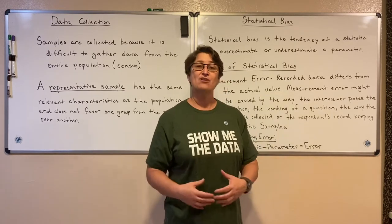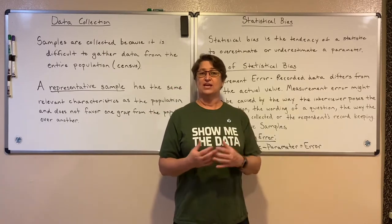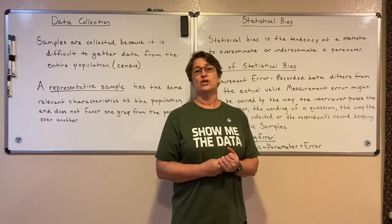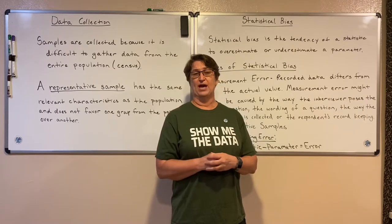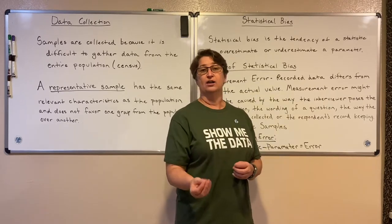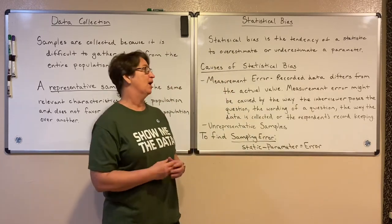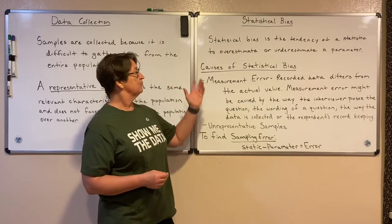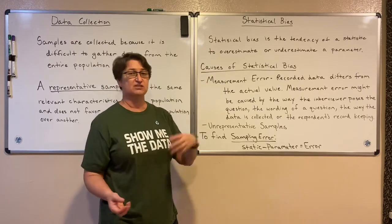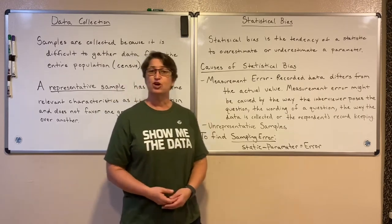When we have an unbiased statistic, that means that if we take a bunch of samples and gather statistics from them and get an average of those, it'll really be like the population parameter. We call that an unbiased statistic. But statistical bias is just that tendency that our statistic and our parameter are not quite the same, and there are some different causes of that.